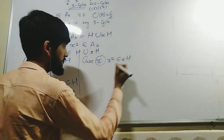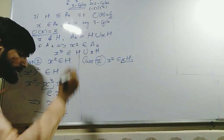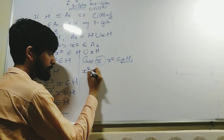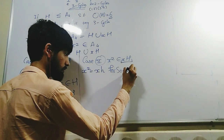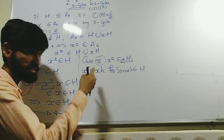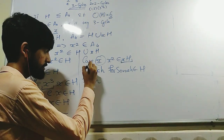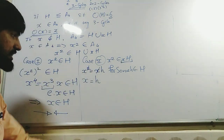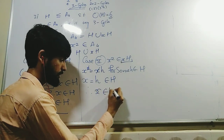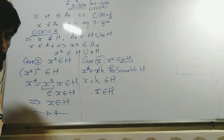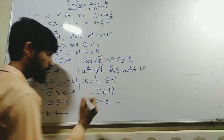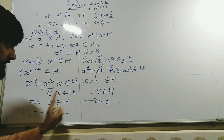In Case 2, x² is an element of xH, which means x² equals x·h for some small h in H. Cancelling x from both sides — which is valid using the cancellation law in a group — we get x equals h. Since h belongs to H, therefore x is an element of H. Again, this is a contradiction to the same assumption. So in both cases we get some contradiction.